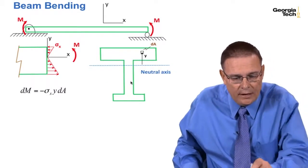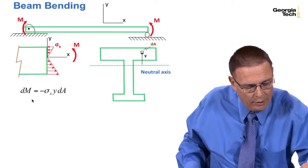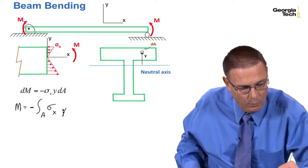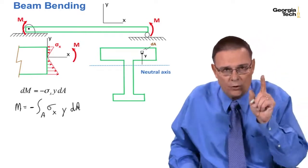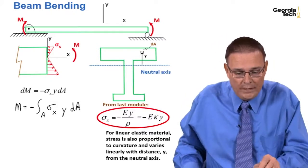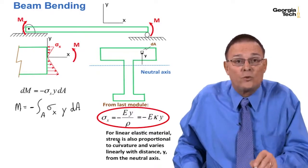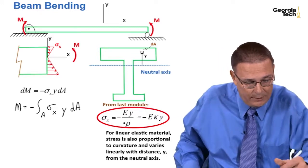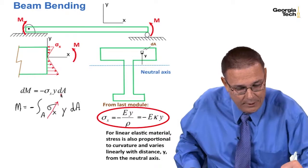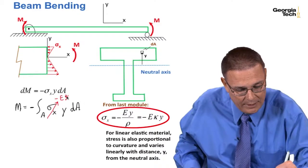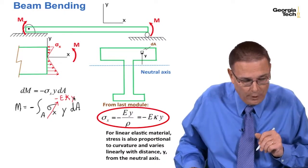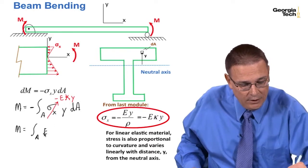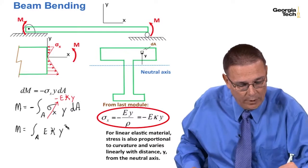Now let's sum up over the entire cross section to get the total M. The total M equals minus the integral over the entire area of sigma_x · y · dA. Since we're assuming we're working in the linear elastic region, from the last module stress was proportional to curvature and varied linearly with distance y from the neutral axis: sigma_x equals minus E · kappa · y. Substituting that in, M equals the integral over A of E · kappa · y² dA.